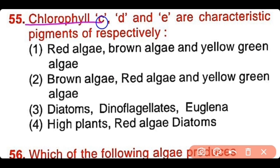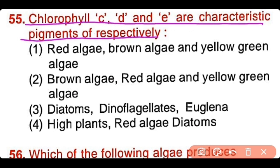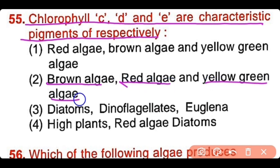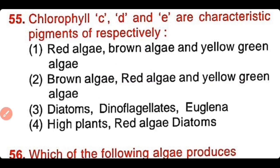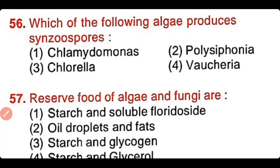Question number 55: Chlorophyll C, D, and E are characteristic pigments of which algae respectively? Chlorophyll C is present in brown algae, chlorophyll D is present in red algae, and chlorophyll E is present in yellow-green algae. The correct answer is option 2.